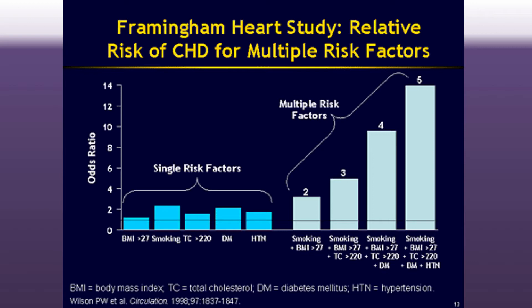What they found is that there's actually a multiplicative effect when you combine those factors. If you combine smoking and BMI, that actually goes up to about three — which is more than both added together. And if you look at people who have all five of those different risk factors combined, it goes up to an odds ratio of about 14, which is a really high risk for developing heart disease. So the combination of those factors sometimes produces an impact much greater than those factors themselves.